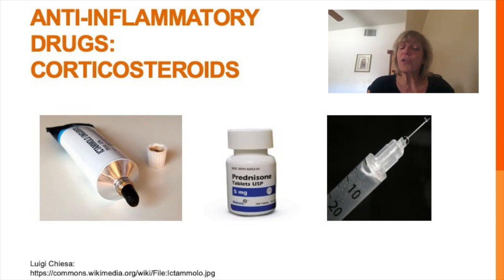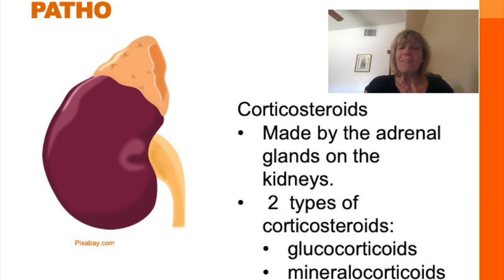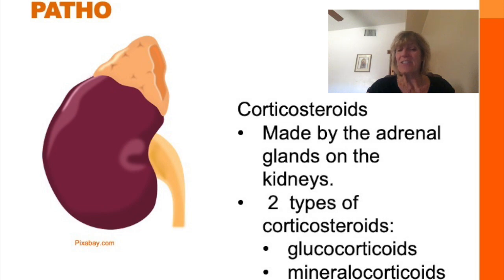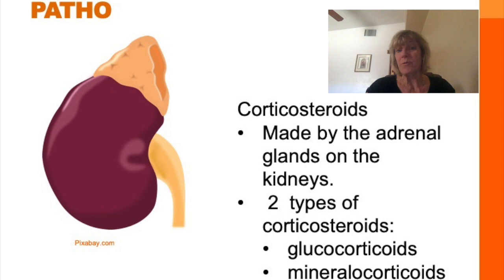This lecture is on glucocorticoids. Steroids are simply an organic compound with a specific structure. When discussing steroids, many people think we're talking about anabolic steroids — those synthetic versions of testosterone that athletes use to build muscle. But corticosteroids are quite different. They're a group of steroid hormones made by the adrenal glands. Corticosteroids are classified as glucocorticoids and mineralocorticoids. We'll talk about glucocorticoids in depth because they're used so commonly in pharmacology and have a tremendous impact on the immune system's inflammatory response.